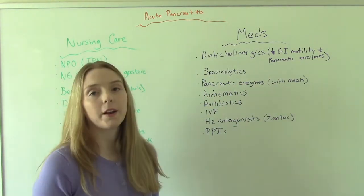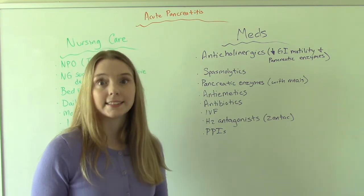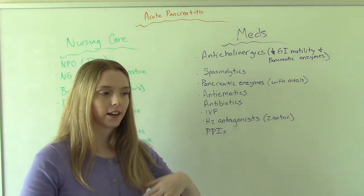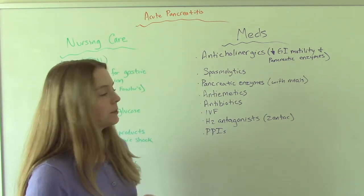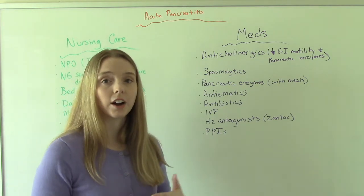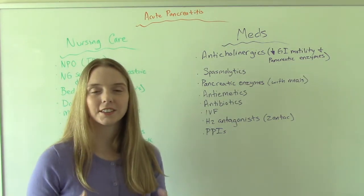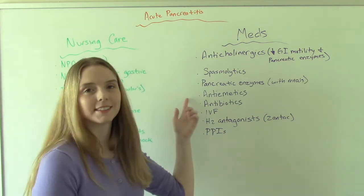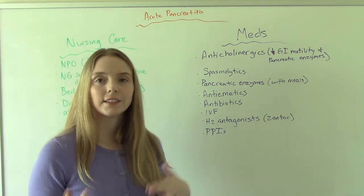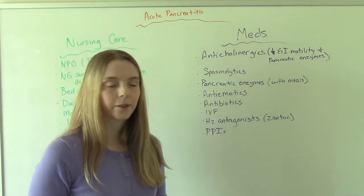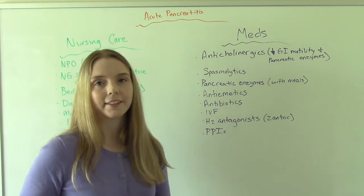Anticholinergics will be given to decrease GI motility — helping with nausea and vomiting and also to help decrease pancreatic enzymes. Spasmolytics relax smooth muscle, which helps with pain. Pancreatic enzyme replacements are given usually when the patient is ready to start eating again — we recommend giving these with meals. Antiemetics are given because we can't ignore nausea and vomiting. Antibiotics are given if the cause is infectious or even suspected. And IV fluids for fluid replacement — think about all the fluid they're losing.